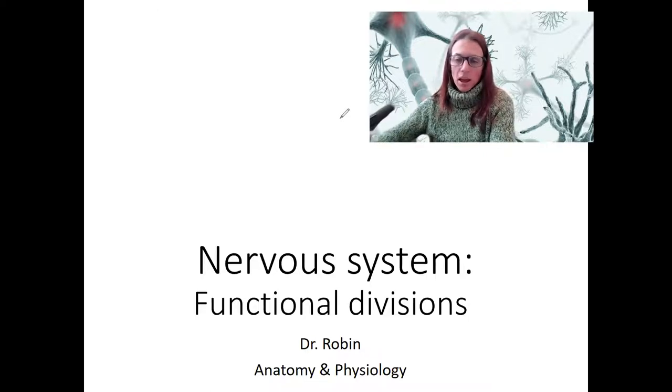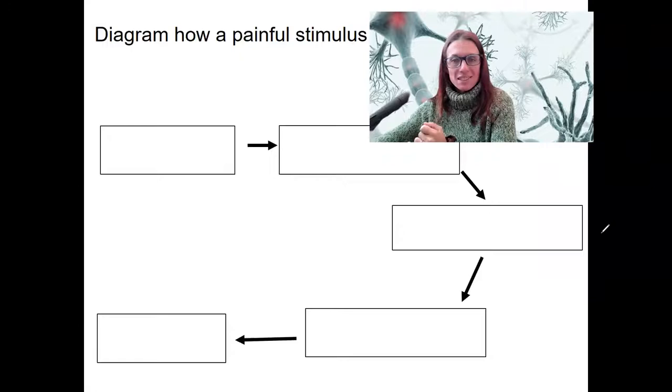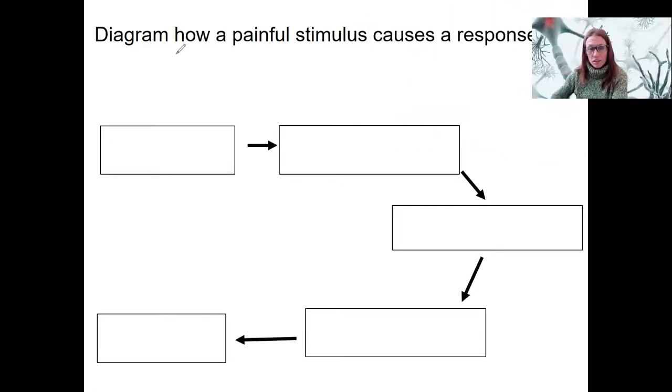For functional divisions of the nervous system, I want to start by actually having you refer to something you've already done, and we're going to apply that information to our functional divisions to try to make sense of them. This is similar to what you've looked at before with a feedback loop, and then more generally, a stimulus response pathway.